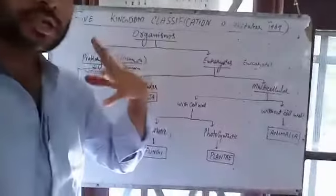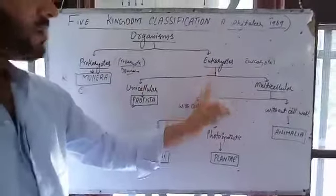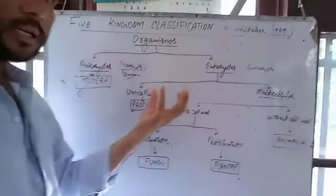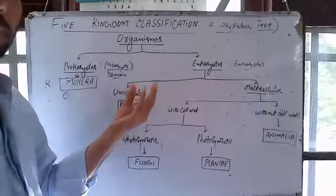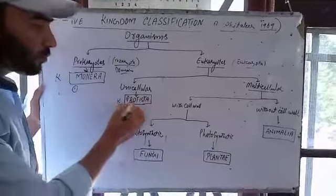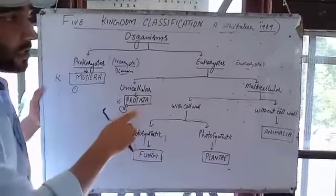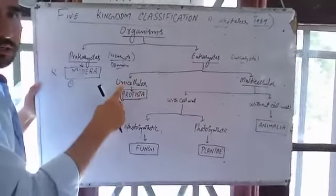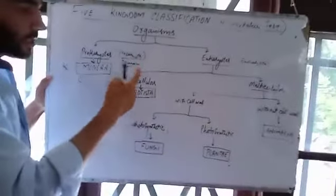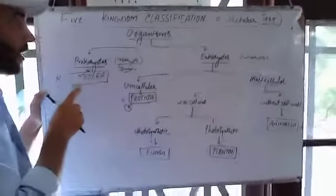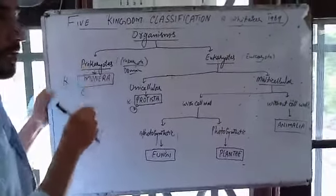The eukaryotes include all other organisms. They can be either unicellular or multicellular. The unicellular eukaryotes form Kingdom Protista — the second kingdom. The difference between Protista and Monera is simple: Protista are eukaryotes, while Monera are prokaryotes.